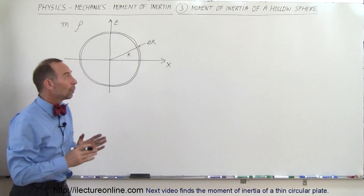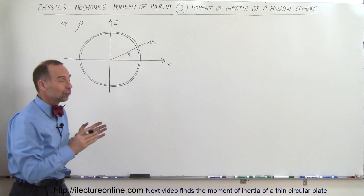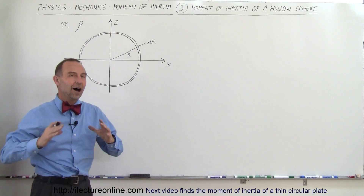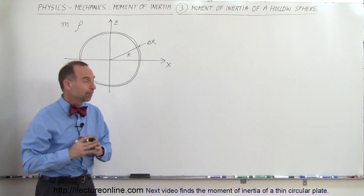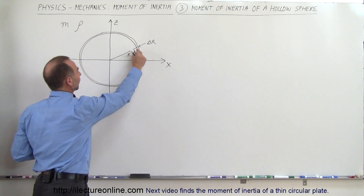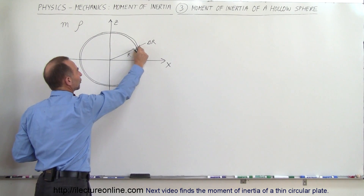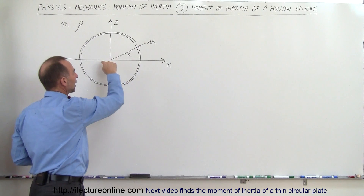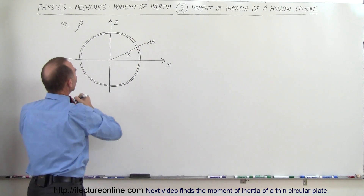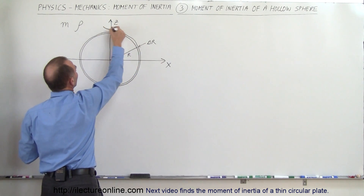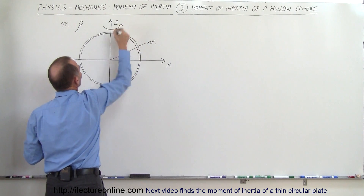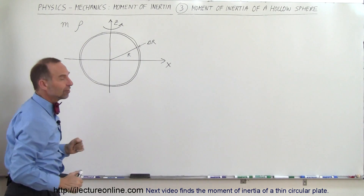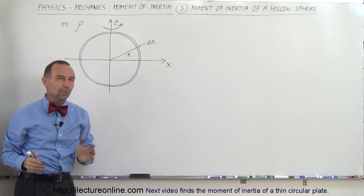Welcome to ElectronLine. What we're going to do here is try to find the moment of inertia of a hollow sphere. The sphere is very thin, it has a very small thickness delta r, it has a radius r, it's going to be rotating about this vertical axis z, and it has a mass m and a density rho.